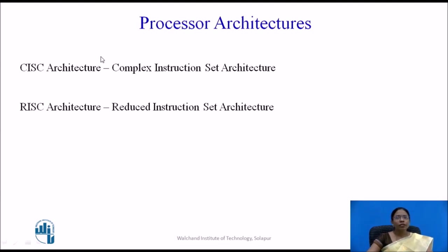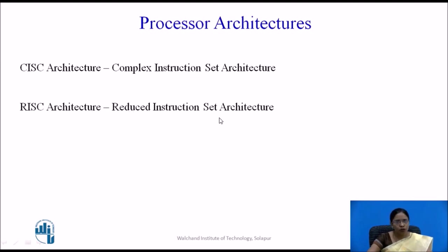The processor architectures based on number of instructions are CISC — Complex Instruction Set Architecture — and RISC — Reduced Instruction Set Architecture. As the name suggests, RISC has a reduced, smaller number of instructions, while CISC has a large, complex number of instructions in the architecture.